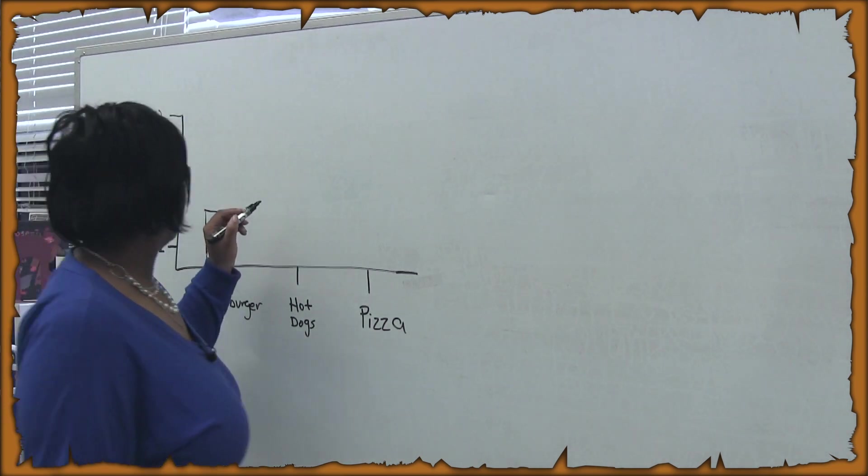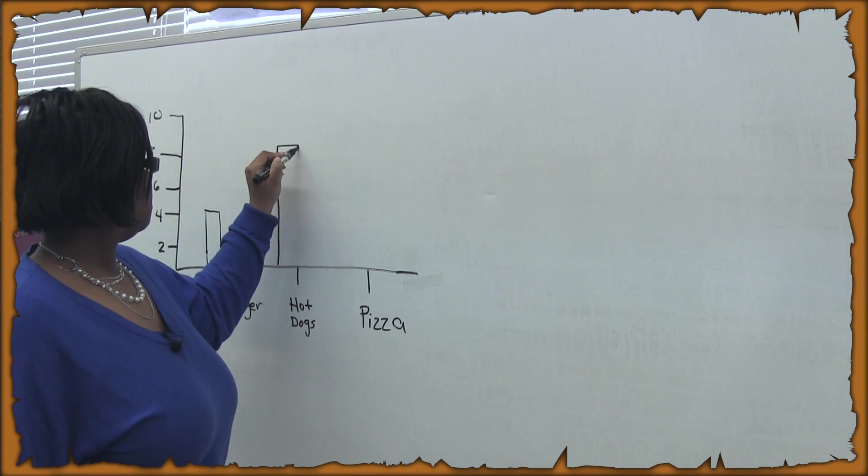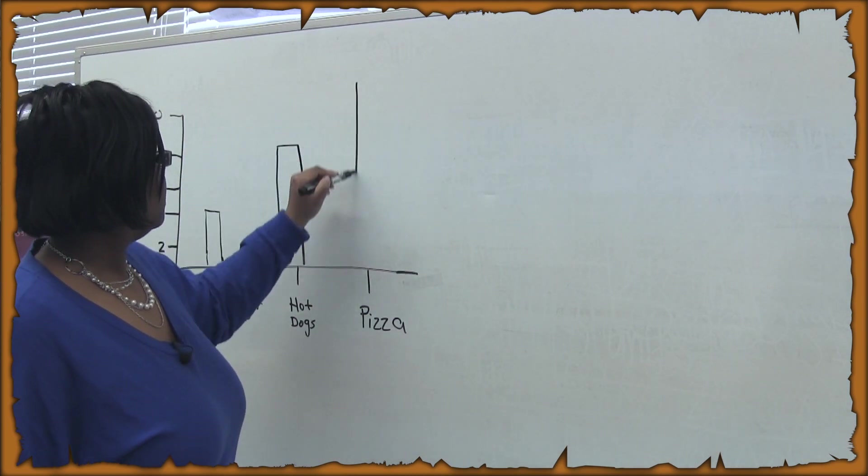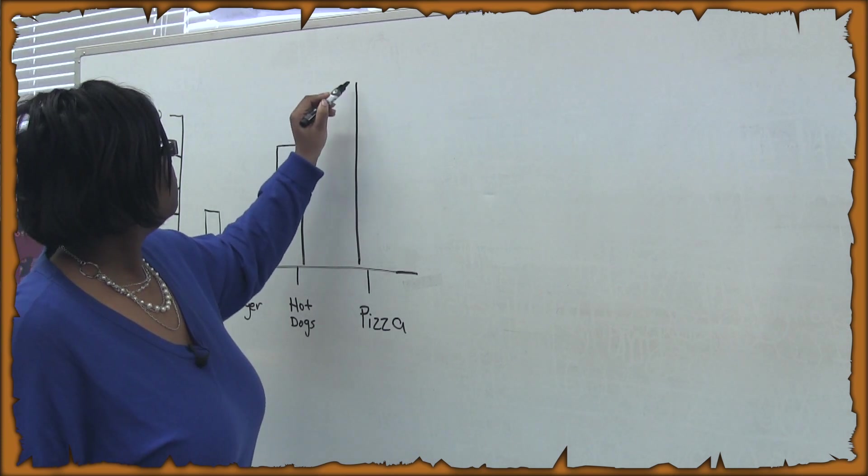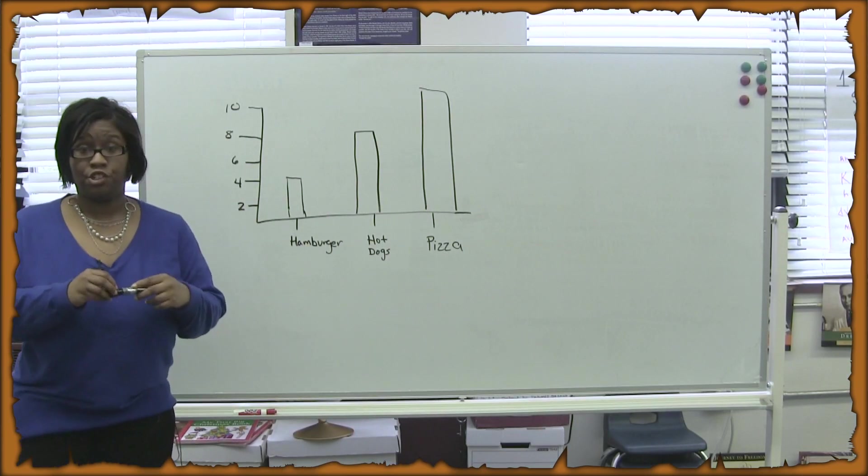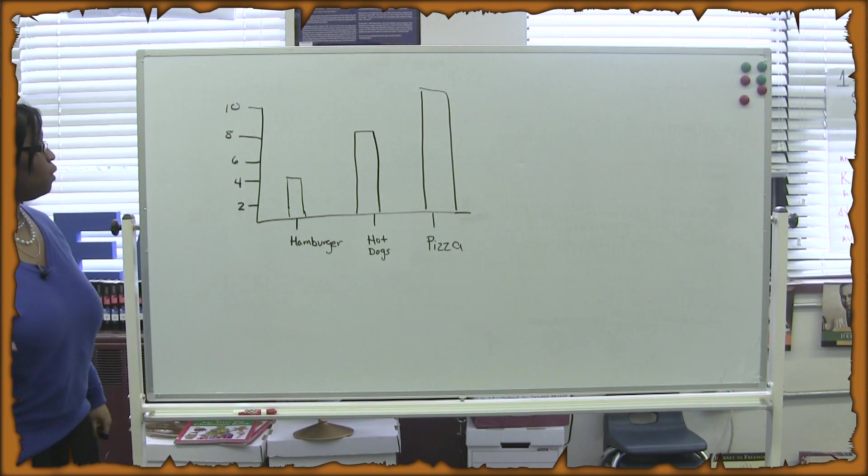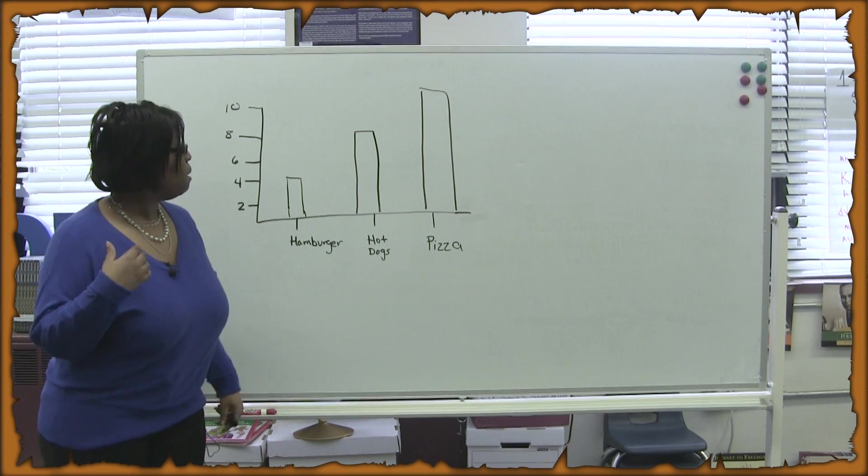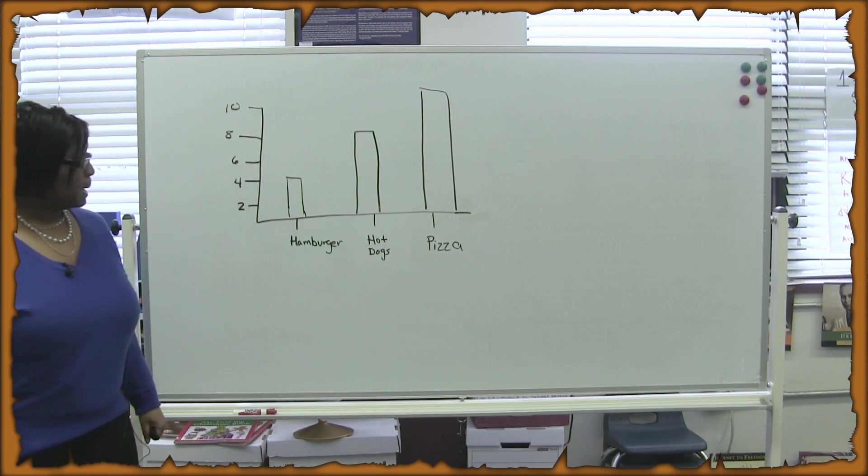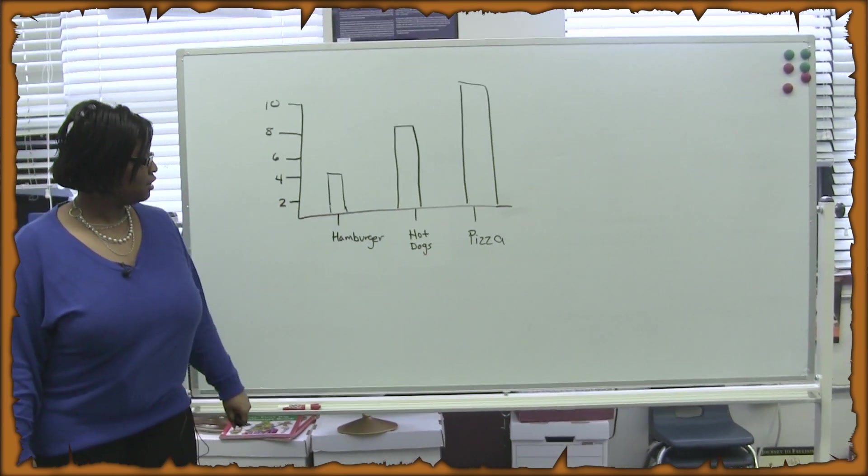And we'll say that eight students like hot dogs and ten like pizza. What are some predictions that you can make from looking at this graph? Well, one prediction I can make is that more students like pizza than they like hot dogs. Less students like hamburgers than they like hot dogs.